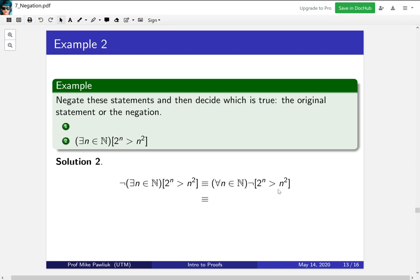So this is for all natural numbers n. This part is negated. And to negate this greater than symbol, it becomes less than or equal to. And there we go. Now let's think about whether we think the statement is true or not. Is it true that for all natural numbers, 2 to the n is less than or equal to n squared? Or to put it another way,